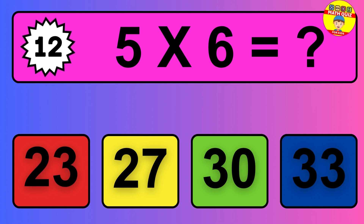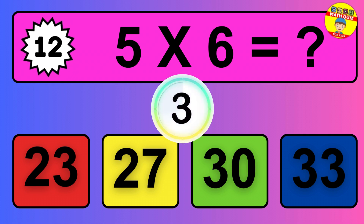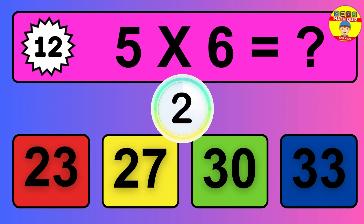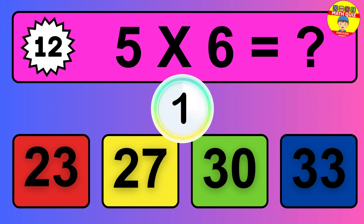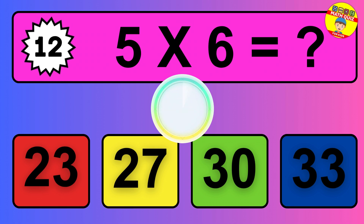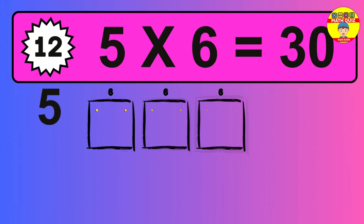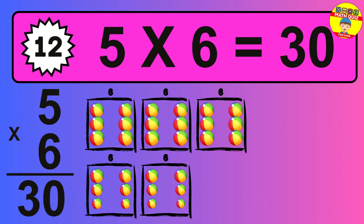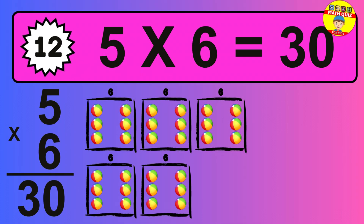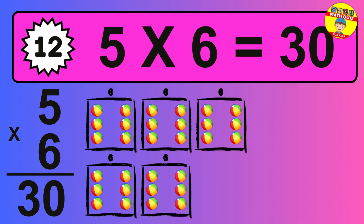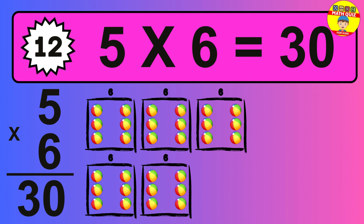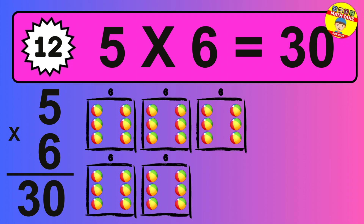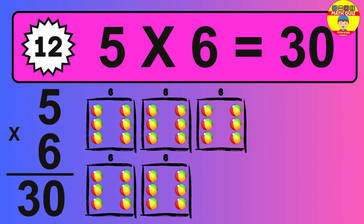So the answer is 5 times 6 is 30. To calculate, we have 5 groups with 6 balls each one. So how many balls do we have? 30 balls.